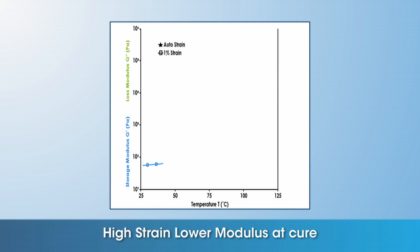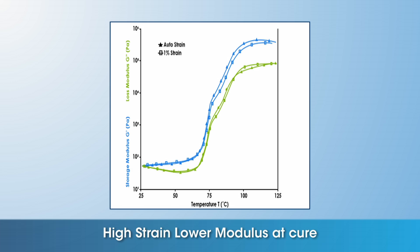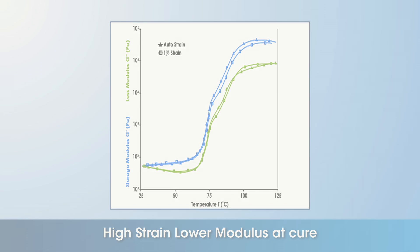The temperature ramp data collected with constant 1% strain looks very nice, and there are no obvious issues. However, upon performing a strain sweep on the cured material, it was found that 1% strain was slightly beyond the linear viscoelastic region. Thus, using Auto Strain to reduce the strain as the material cured was important in the development of the material network, as an increased final modulus was observed in comparison.